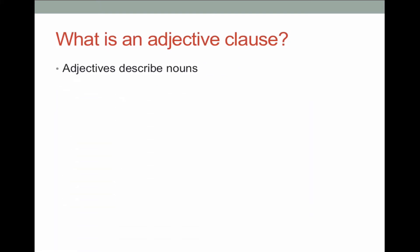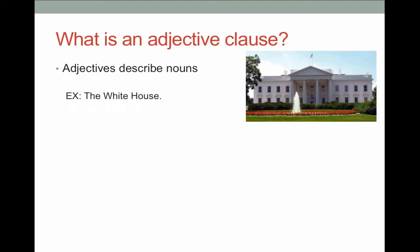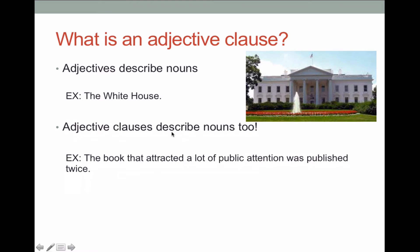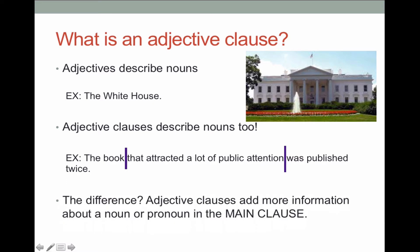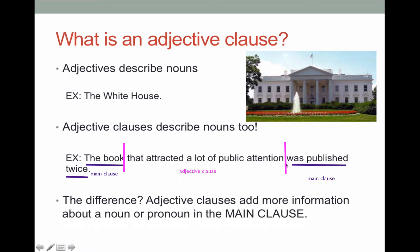So let's talk about what an adjective clause is. We know that adjectives describe nouns — for example, 'the white house': white is the adjective, house is the noun. Adjective clauses describe nouns too. For example, 'the book that attracted a lot of public attention was published twice.' That is my relative pronoun and it's describing the book. The clause goes from 'that' to 'attention.' The adjective clause adds more information about a noun or pronoun in the main clause. 'The book was published twice' is the main clause, and 'that attracted a lot of public attention' is the adjective clause added to give extra information about the book.